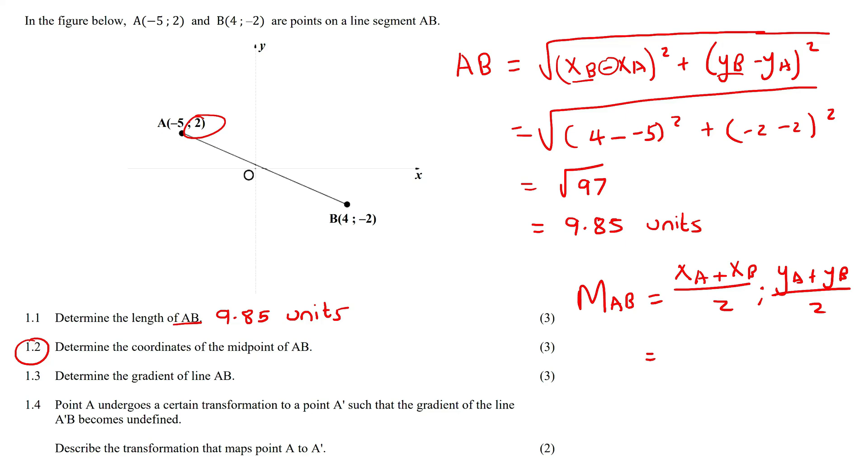Now we just fill in the formula. The x value of point A is minus 5, then the x value of point B is 4. Don't be worried about whether you should put A first or B first - it doesn't matter, as long as if you chose A over here then you must choose A over here, and if you chose B first over here then you must choose B first over there. Just make sure you keep the pattern the same.